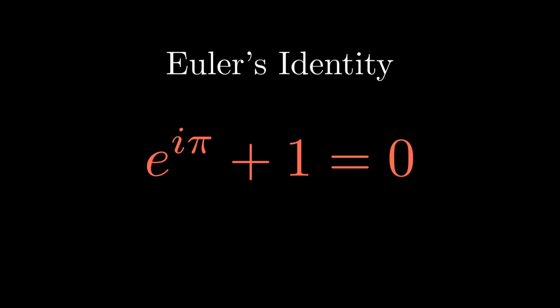Euler's identity, e to the i pi plus 1 equals 0, is often celebrated as the most beautiful equation in mathematics.